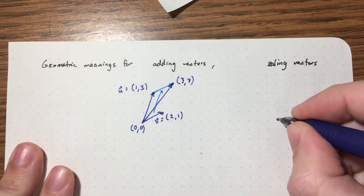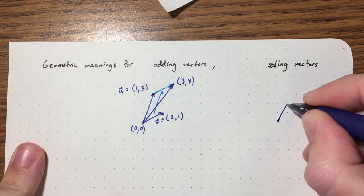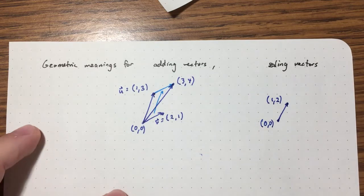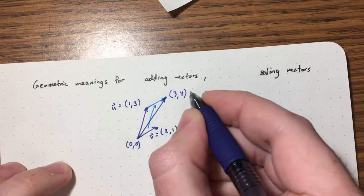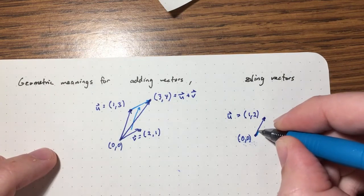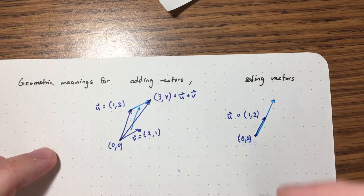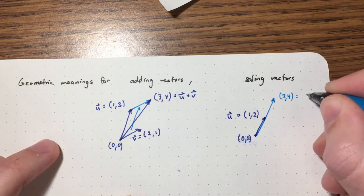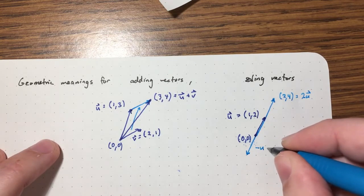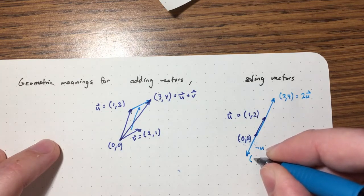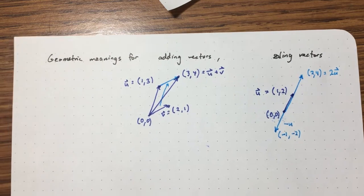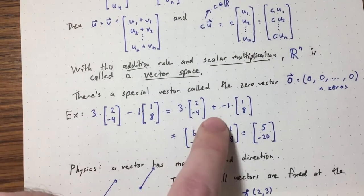For scalar multiplication: if U = [1, 2], then 2U = [2, 4] — the vector is scaled. Negative U = [-1, -2] — it's reflected the other way. That's what scalar multiplication looks like geometrically. Subtraction is just adding the negative, so you make the scalar negative.